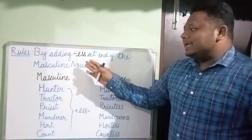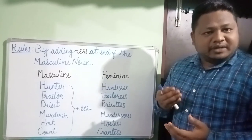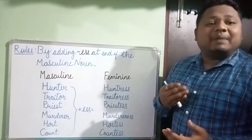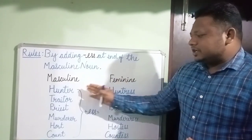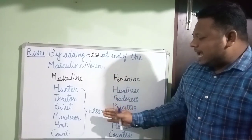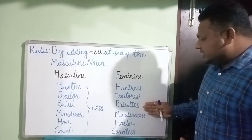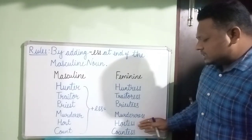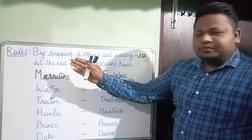Now let us see some rules for making a feminine noun from a masculine noun. Rule one: by adding '-ess' at the end of the masculine noun. Examples: hunter becomes huntress, traitor becomes traitress, priest becomes priestess, murderer becomes murderess, host becomes hostess, and count becomes countess. There are many more such examples.